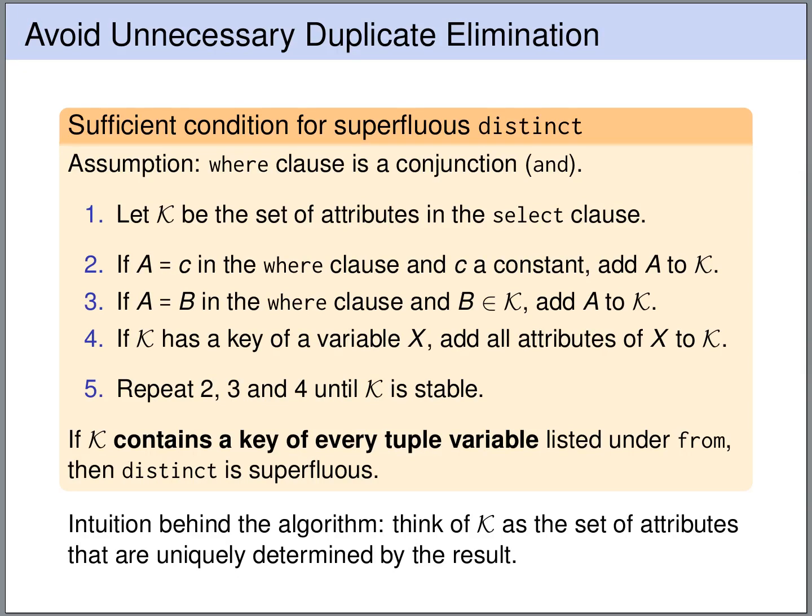Here we have an algorithm that helps us determine whether DISTINCT is superfluous. This algorithm is based on the assumption that our WHERE clause is a conjunction. The idea is to show that every output row can occur only once, making DISTINCT superfluous. We start from the output row and trace it back to the possible combination of input rows that led to it. If we can show there is a unique combination of input rows, then the output row can appear at most once.